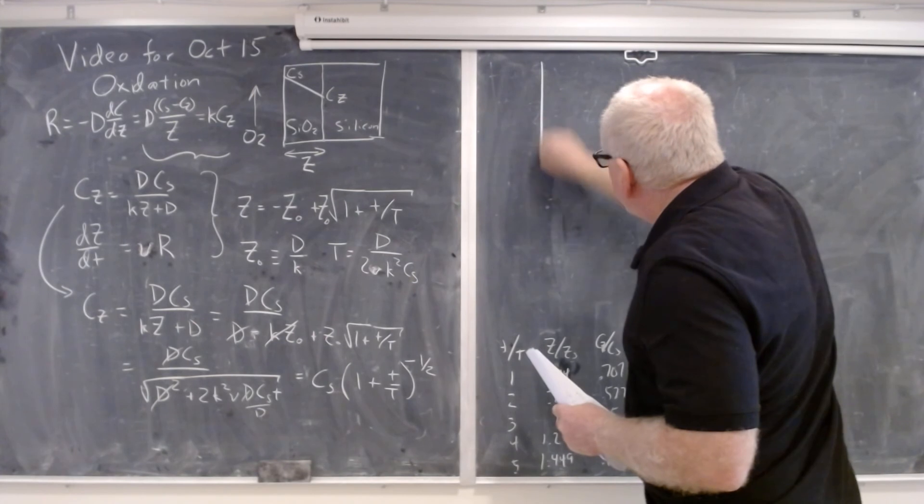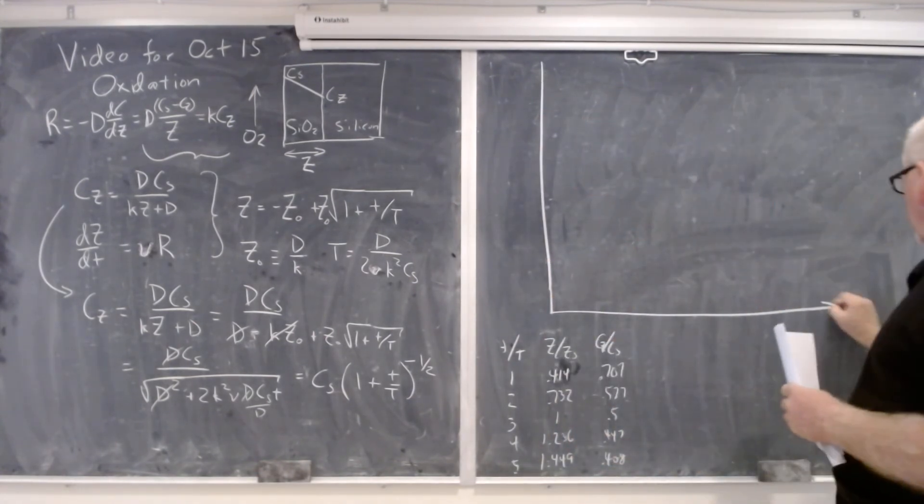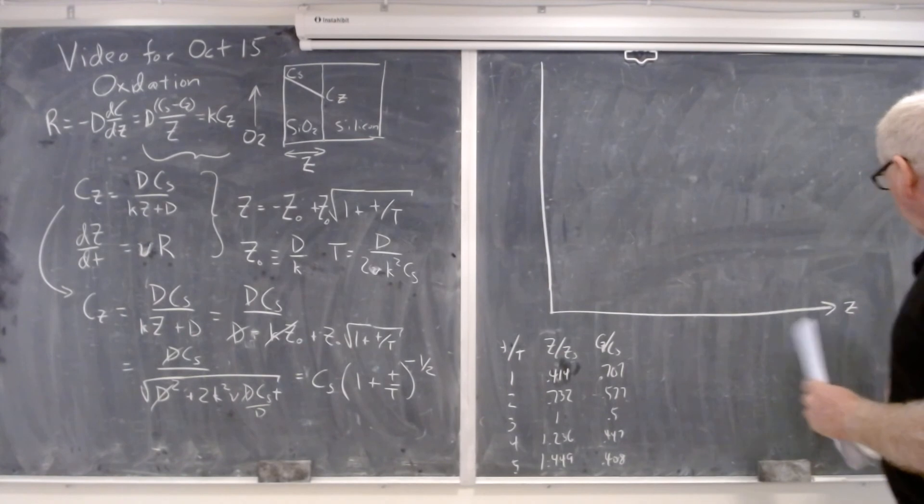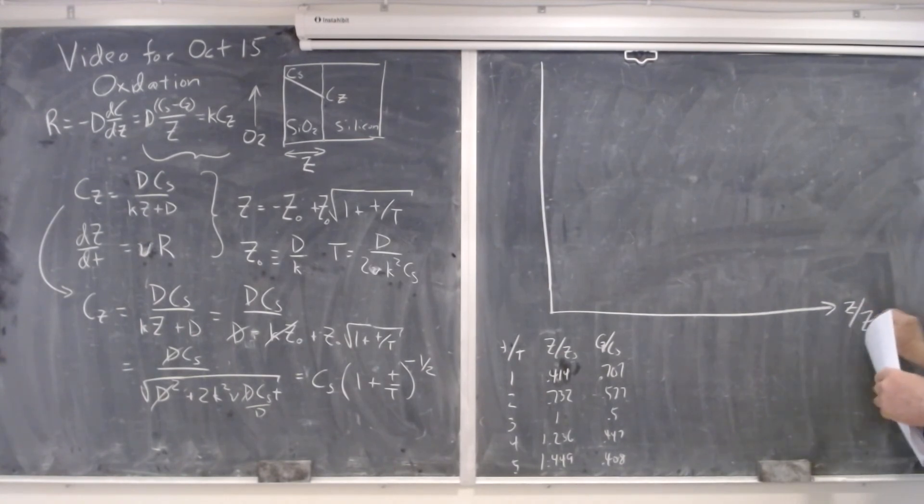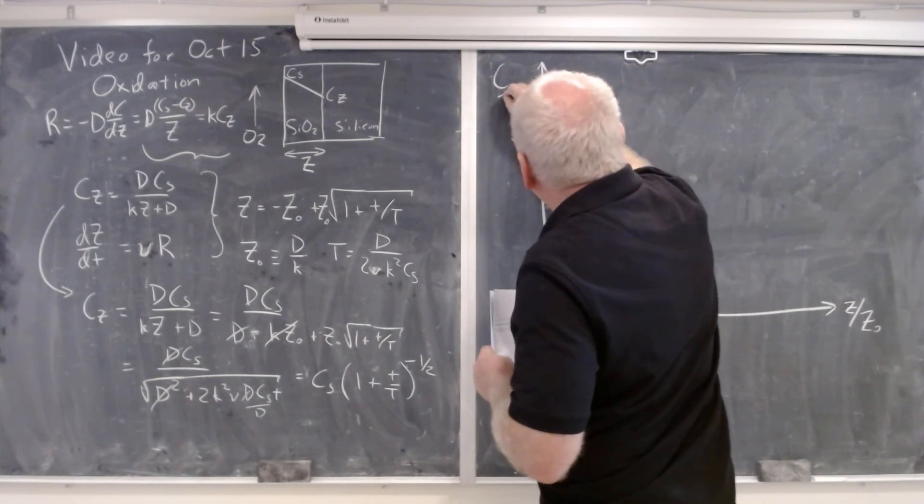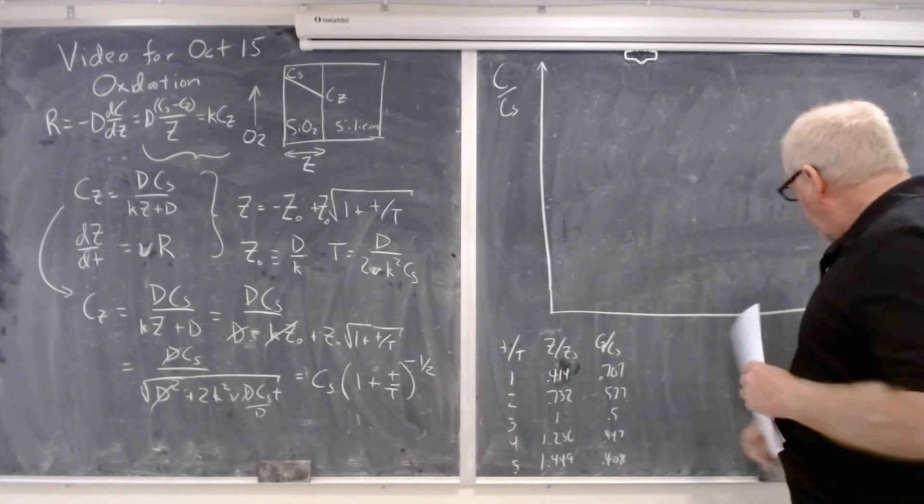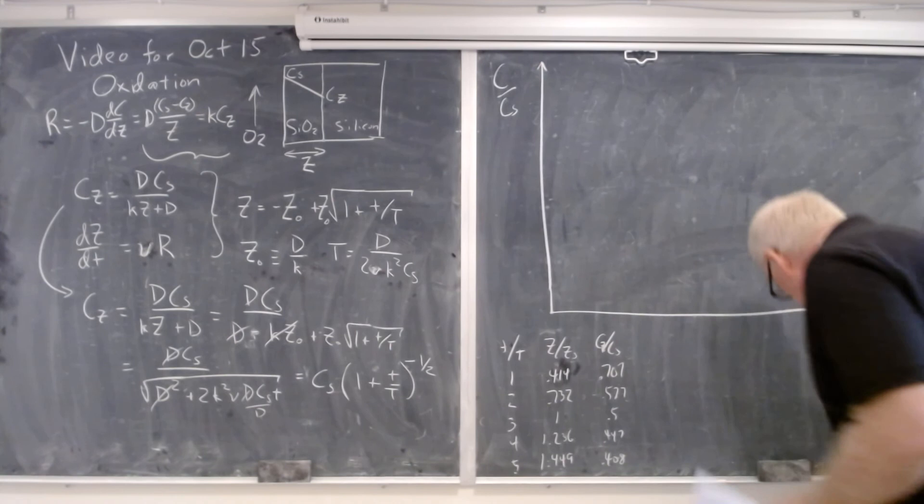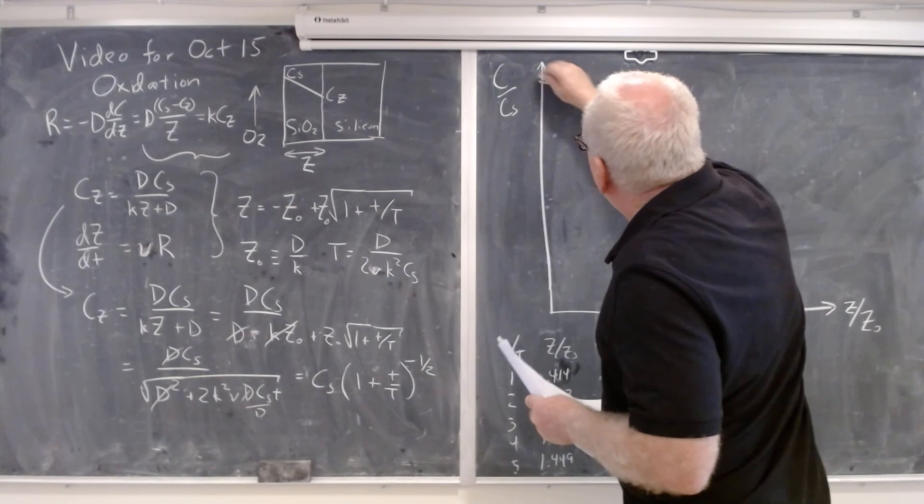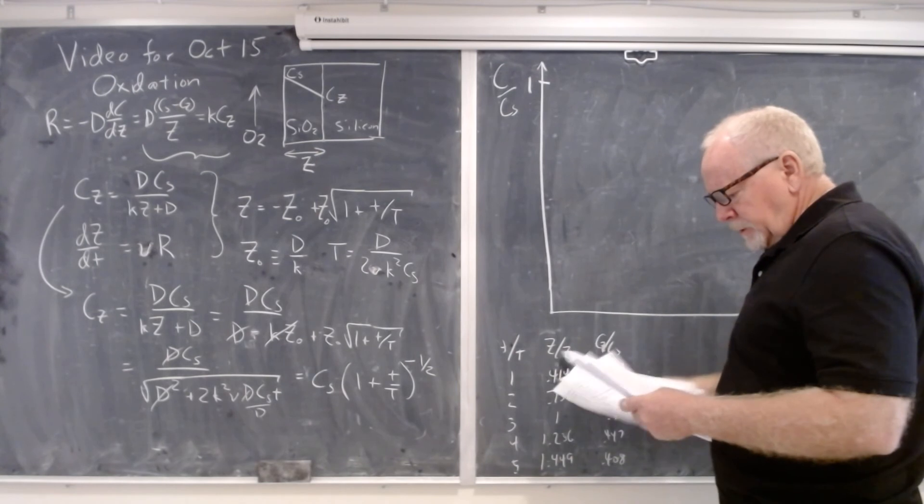Now what I wanted you to do though is make the plot so that I knew that you understood what was going on here. So this is now versus little z, the actual depth normalized to z naught. And I wanted the concentration as a function of z relative to Cs. And so of course all the curves start at 1 because the concentration is that at the surface.